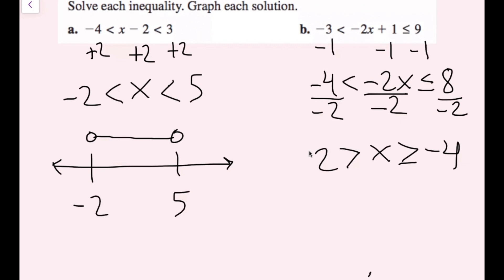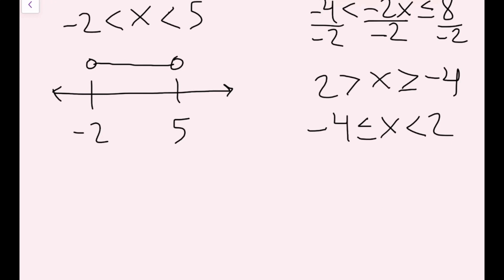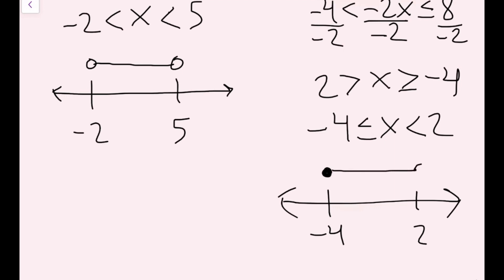I rewrite the inequality as -4 ≤ x < 2 using less-than symbols. Then I graph: I draw my number line with negative 4 and 2, fill in the circle at negative 4 to show it's included, and use an empty circle at 2 to show it's excluded. To verify, 0 is larger than -4 and smaller than 2, so 0 is in the solution set. We're done.